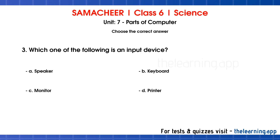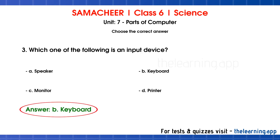Third question: Which one of the following is an input device? Options are A) speaker, B) keyboard, C) monitor, D) printer. The correct answer is B, keyboard. If we have a system or computer, we can use an input device or any output device to do any process.